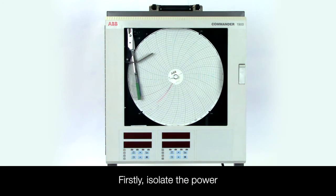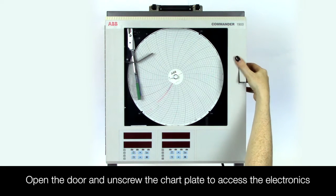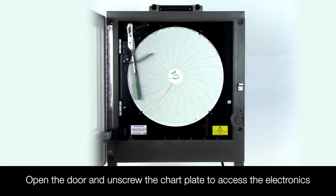First isolate the power to the C1900, open the door and undo the chart plate screw to gain access to the electronics.